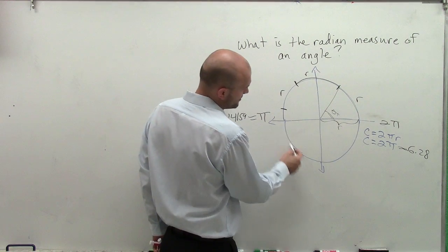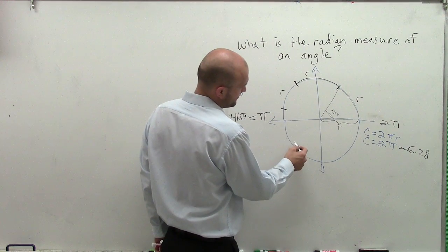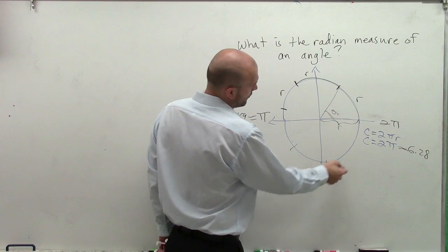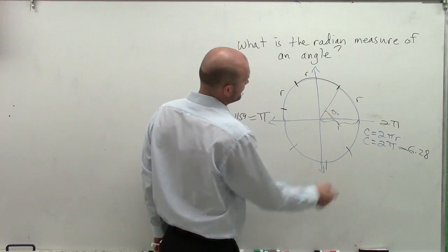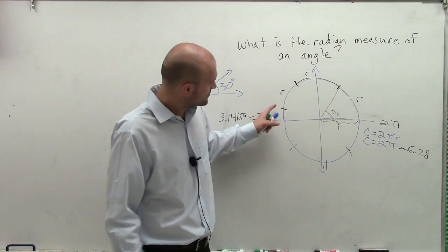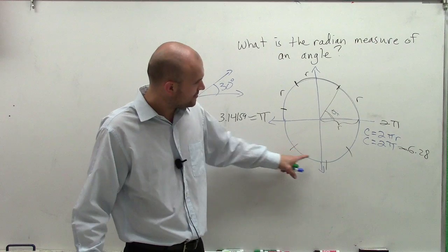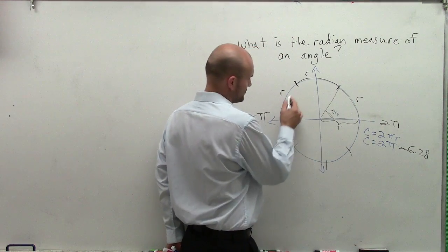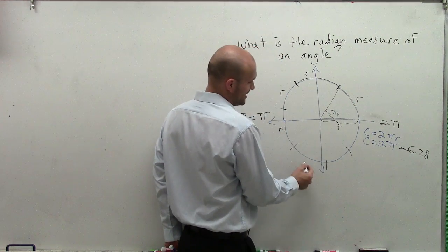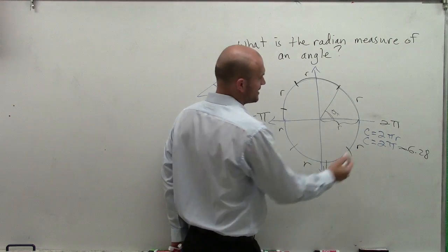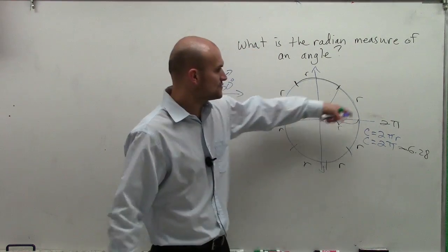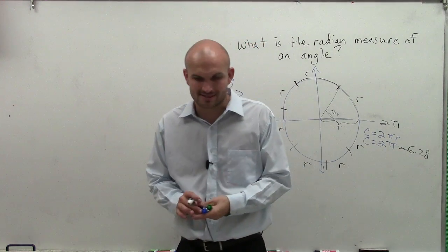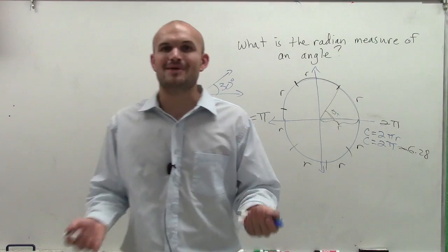When we continue — we have 3, 4, 5 radians — you notice that we roughly have about 6.28 radians going all the way around the circle.